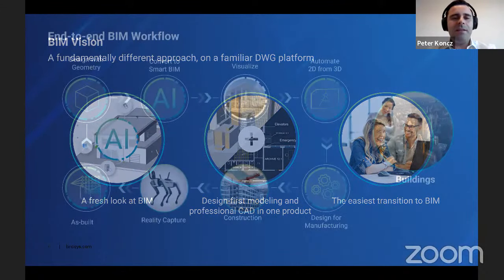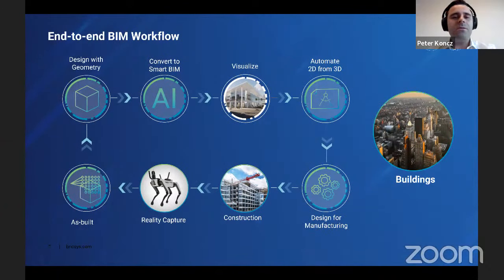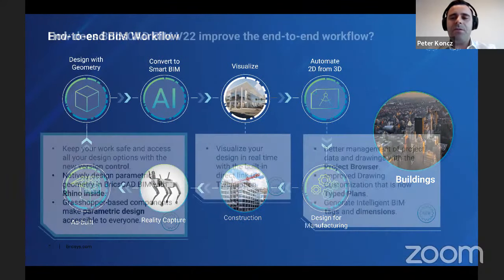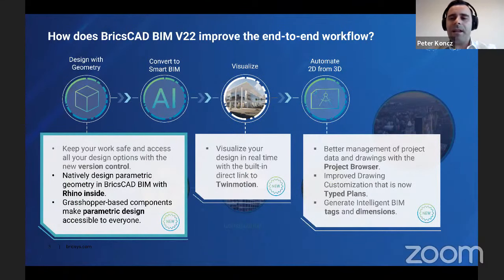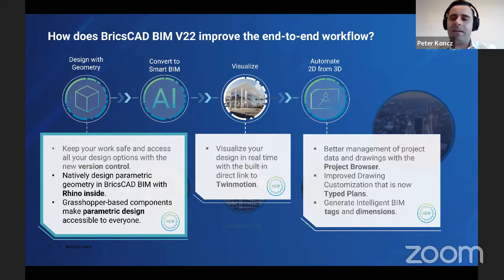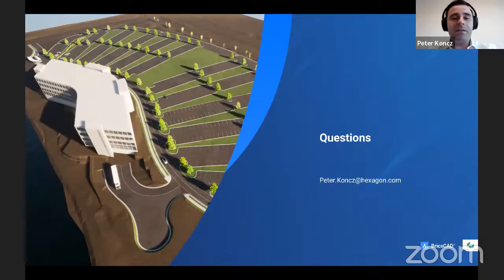This is the BricsCAD BIM end-to-end workflow, and you can learn more about this on our October 26 digital summit, which will soon be accessible on YouTube. In October 26 we released a new version of BricsCAD BIM — V22. Today we'll talk about the parametric design features: you can now natively design parametric geometry inside BricsCAD BIM with Rhino Inside, and we have a new feature called Grasshopper-based components. Stay with us to see Sagar demonstrate all of these features.